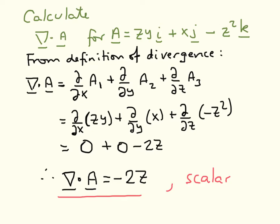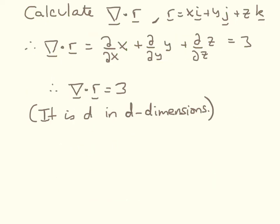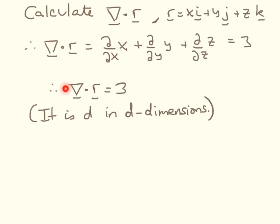We can move on to the next question. The second question is to calculate the divergence of r, where r is the position vector xi plus yj plus zk, given here in three dimensions. Using the definition from the previous example, the divergence is obtained by differentiating x with respect to x, then adding the derivative of y with respect to y, and then adding the derivative of z with respect to z. Each of these derivatives is 1, so we have 1 plus 1 plus 1, which gives us 3. The divergence of the position vector is 3.